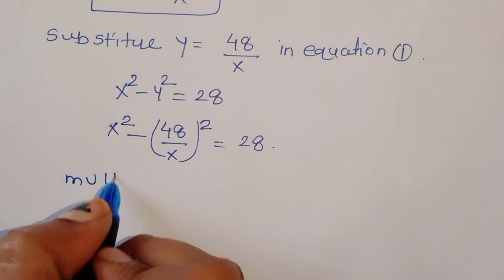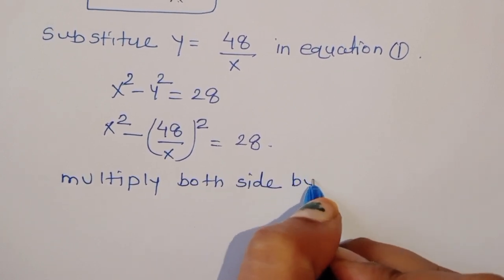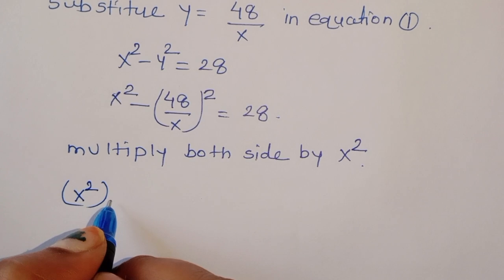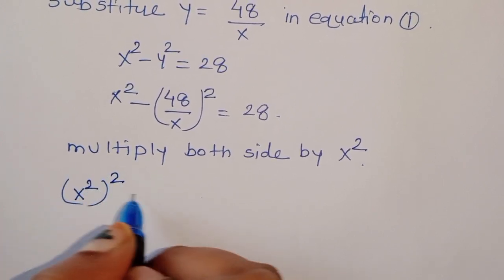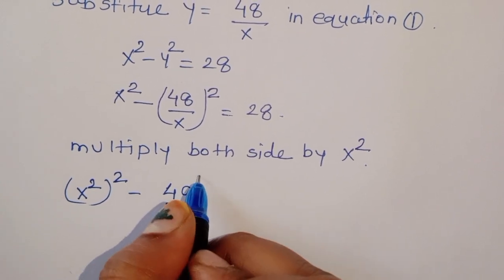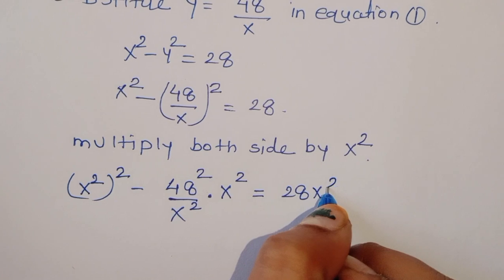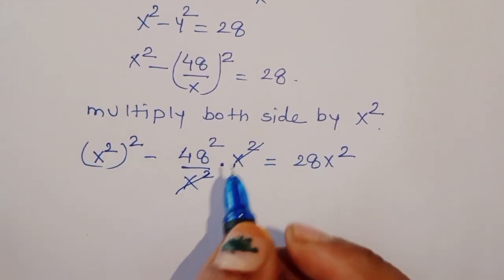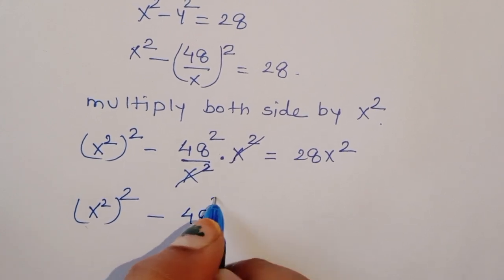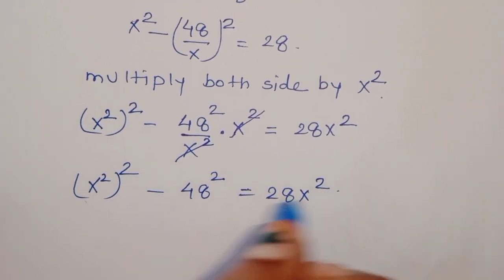Now we multiply both sides by x². On the left, x² times x² gives x⁴, and 48²/x² times x² cancels to give 48². So we get x⁴ - 48² = 28x².